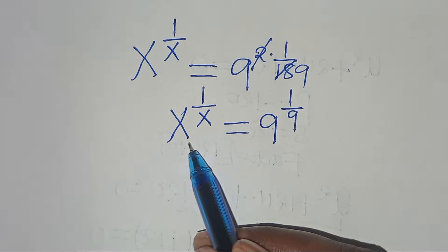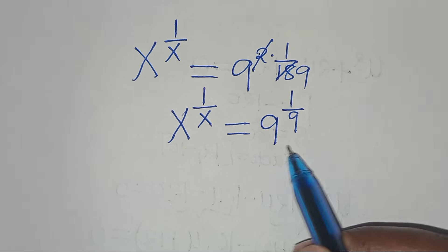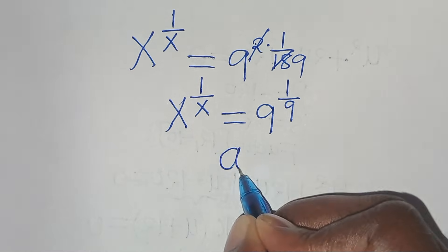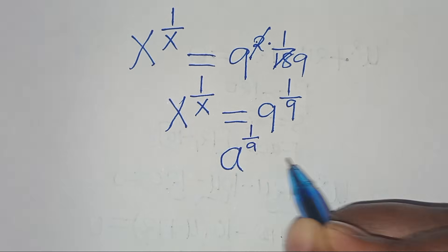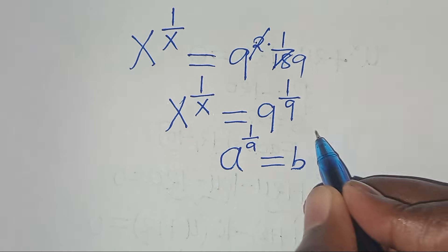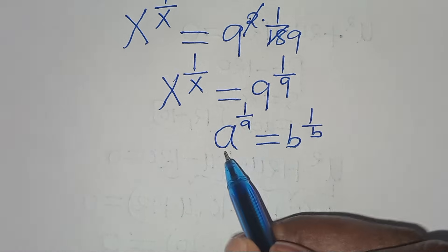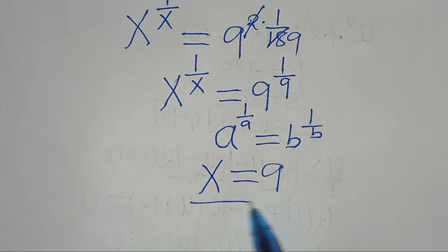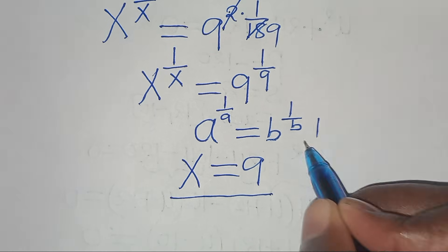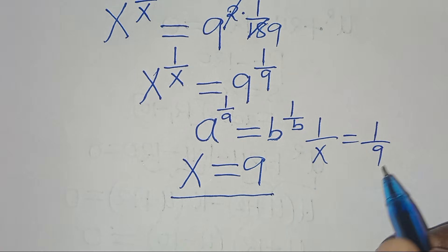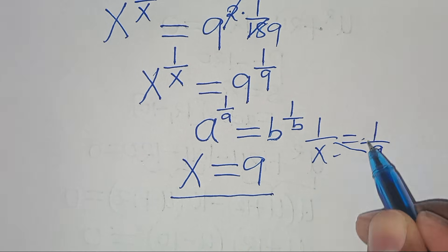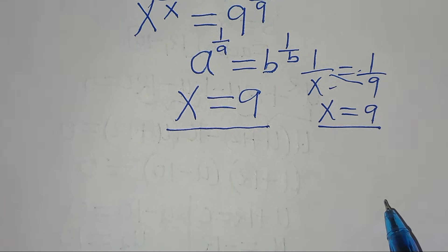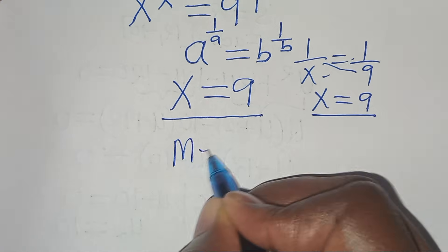Now if you check the base here, it's the same as the exponent here, and the base is also equal to the exponent. So that is a to the power of 1 over a equals b to the power of 1 over b. In this case, we have that x is equal to 9. We have 1 over x equal to 1 over 9, and if we cross multiply, x is equal to 9. Now let's solve this exponential equation by applying method 2.